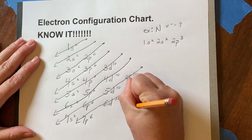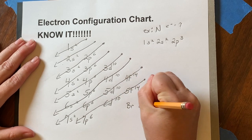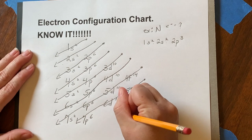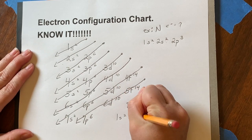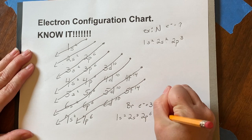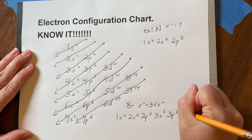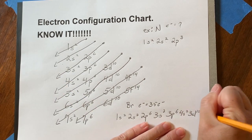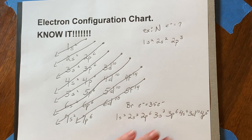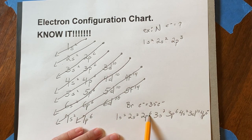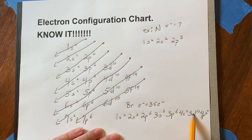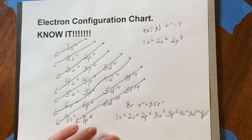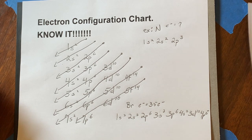We're back. Bromine has 35 electrons. Following that order, this is what you should have: 1s² 2s² 2p⁶ 3s² 3p⁶ 4s² 3d¹⁰ 4p⁵. Always double check. 2 and 2 is 4, and 6 is 10, and another 10 is 20. That brings me up to 30 and 35. So I've used my 35 electrons for bromine. That's what the answer for bromine should be.